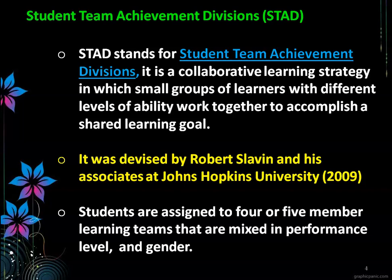Students are assigned to four or five member learning teams that are mixed in performance level and gender. In a co-educational institution, you can mix girl and boy students with different performance levels — above average, below average, and poor students. You have to arrange it so that in every team there is at least one above average student, so that the above average student will help the poor or slow learner.